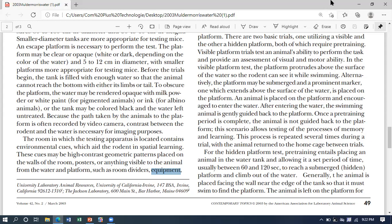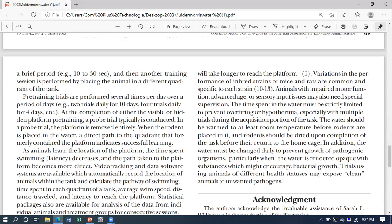The second one is the hidden platform test trial. In this case, it is important to keep the animal in the water tank and allow them to swim across the water tank. After the animals reach the platform, allow them 10 to 30 seconds to stay, and then place the animal in a different quadrant of the tank. Pre-trials can be done several days - like two trials daily for 10 days, or four trials daily for four days.